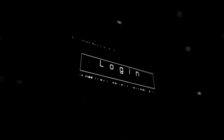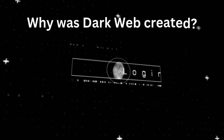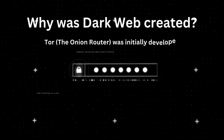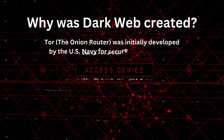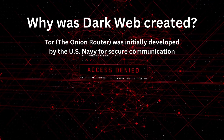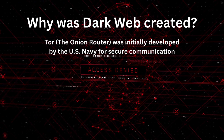What is the dark web? The dark web is an encrypted network that allows users to operate anonymously. Websites on the dark web use .onion domains instead of .com or .org, and cannot be accessed with standard browsers like Chrome or Safari. Why was it created? Surprisingly, Tor — the Onion Router — was initially developed by the U.S. Navy for secure communication. Now it's used for privacy-focused activities and, yes, some very shady dealings too.